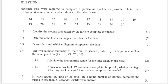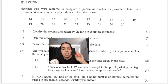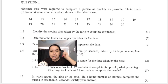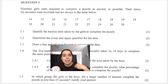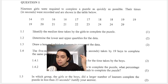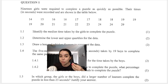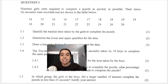1.1 says: identify the median time taken by the girls to complete the puzzle. Now, remember median? That's the middle. Median — middle. And it's good that they've listed it for us already in ascending order, because if they didn't, you'd have to list it in ascending order in order to calculate the median.